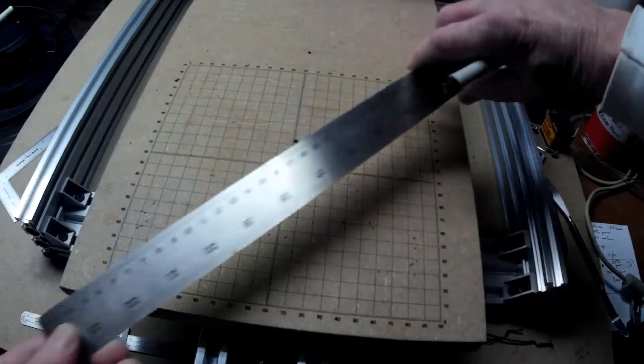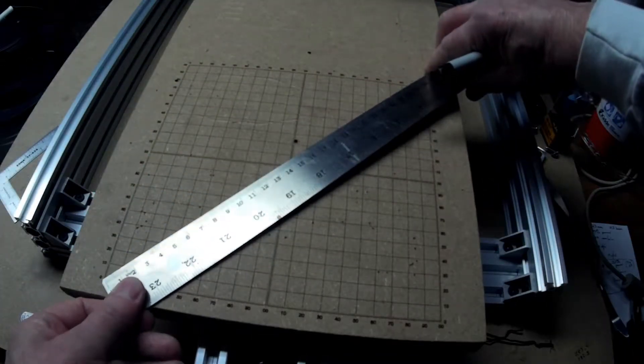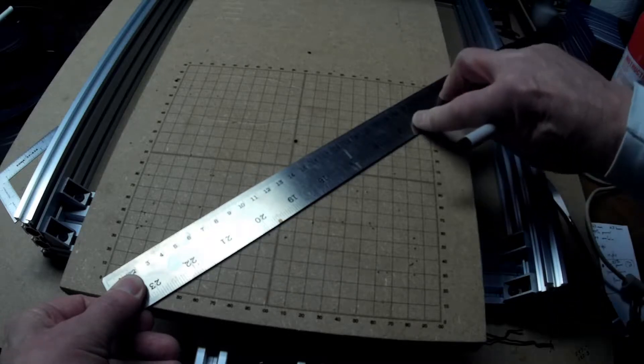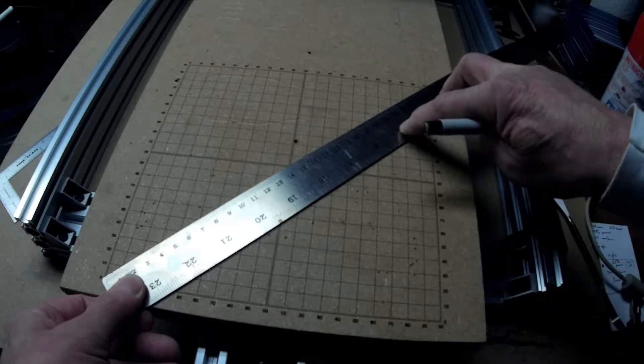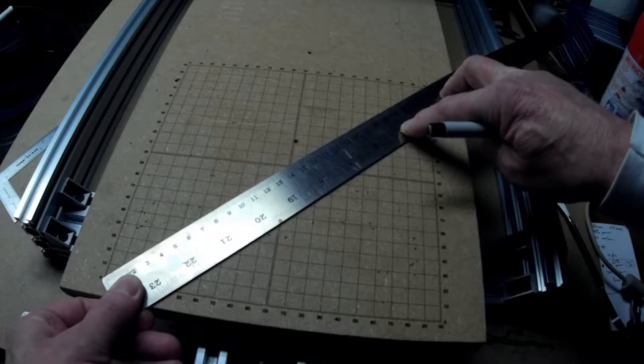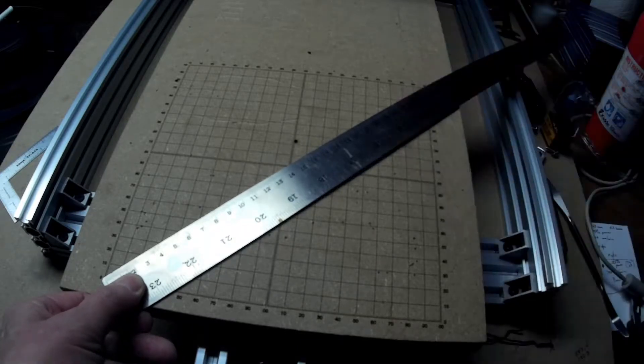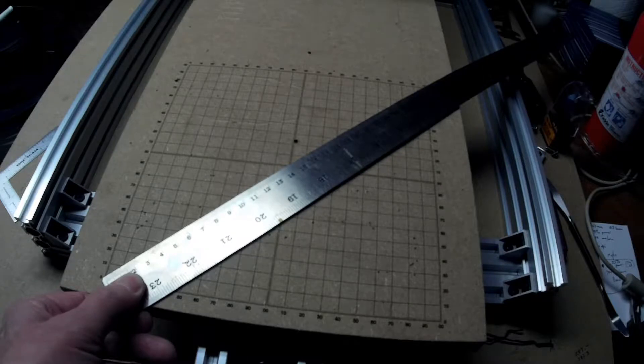I measured the other one, and it is 283.4, so they're not equal, which means that grid is not a perfect square.